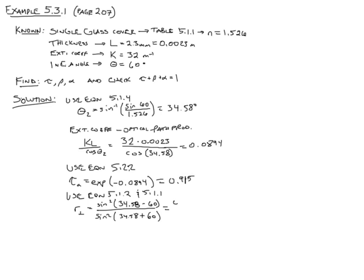That's equal to the sine squared of 34.58 minus 60, which gives 0.184 divided by 0.994, equal to 0.185. Then the parallel component uses the same equation but with tangents instead of sines.